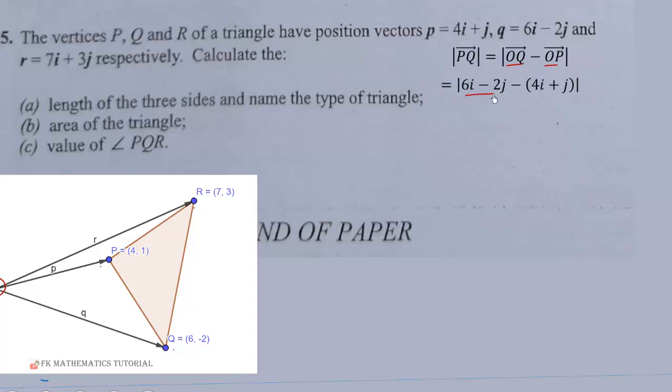So, we substitute the vertex and find the magnitude. So, that will give us root 13 units for PQ. So, PQ is root 13 units. Root 13. So, this side, root 13.